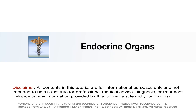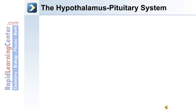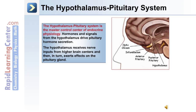We'll now move on to discuss the different endocrine organs including the hormones they produce and their targets. The hypothalamus-pituitary system is the master control center of endocrine physiology. Hormones and signals from the hypothalamus drive pituitary hormone secretion, and the hypothalamus receives nerve inputs from higher brain centers and exerts its effects on the pituitary gland.